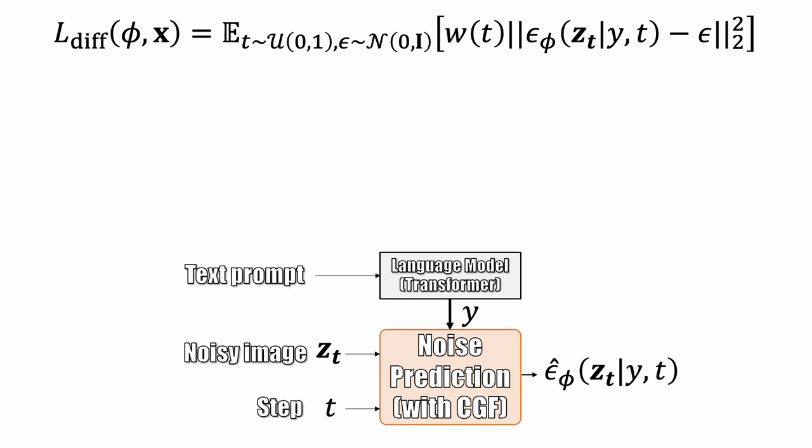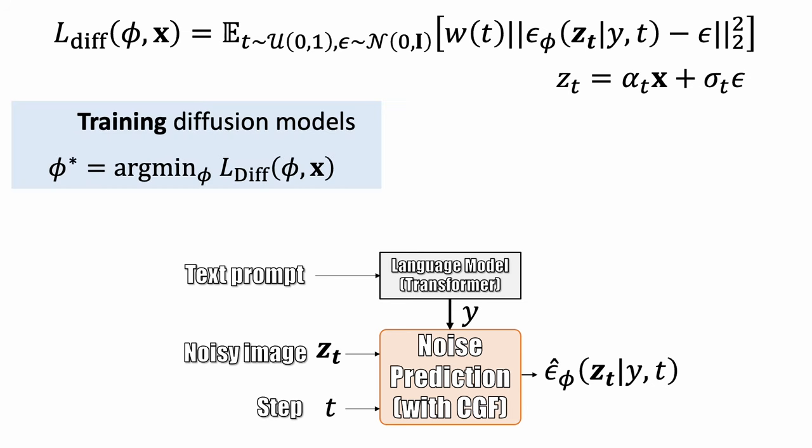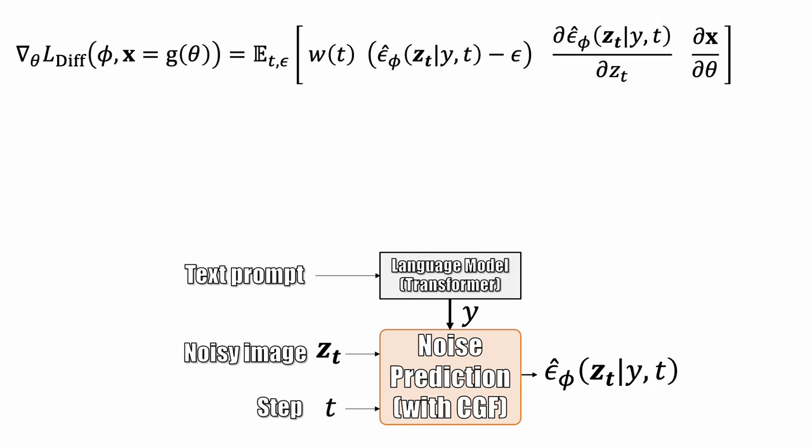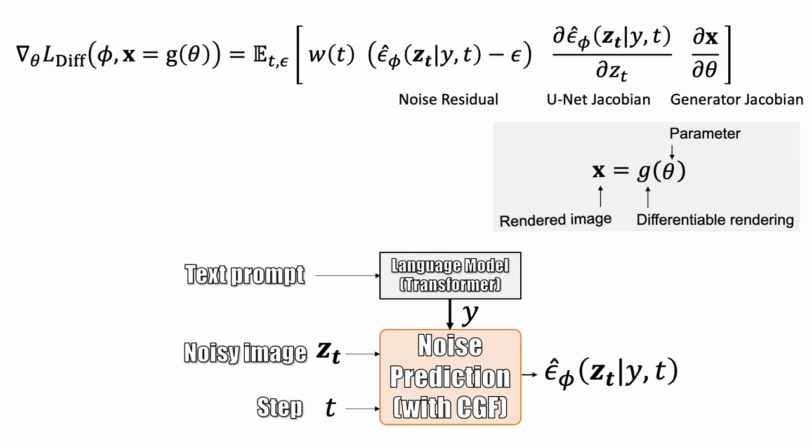We can look at the training loss of diffusion models. The model training involves optimizing the parameters phi of the noise predictor network. With the trained diffusion network, we can sample an image x by minimizing this loss. Here is the gradient of the loss function with respect to parameter theta. With this gradient, we can iteratively update our 3D representation using gradient descent.